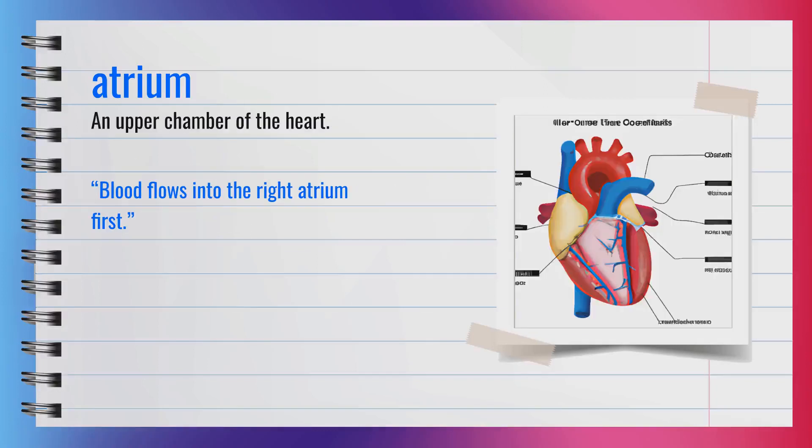The word atrium, spelled A-T-R-I-U-M, is a noun. It means an upper chamber of the heart. Synonyms include heart chamber and vestibule. For example, blood flows into the right atrium first. In summary, atrium means an upper chamber of the heart.